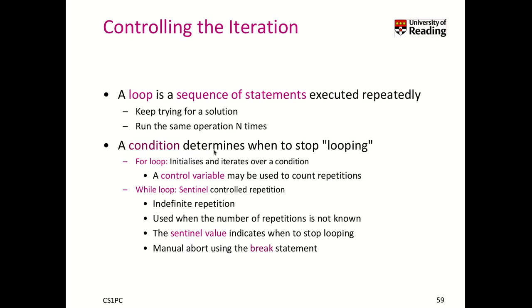The condition determines when to stop the looping. And in a for loop, we initialize and iterate over a condition. In a while loop, we have a so-called sentinel that controls the repetition. That means as long as the sentinel condition is true, we repeat the operation. This allows you also to do indefinite repetitions. The while loop is to be used when you don't know the number of repetitions a priori. Every time you have to check the sentinel condition and you stop looping if that one becomes ever false. In any case, that's also a means to stop the looping of such loops using the break statement as we will see.